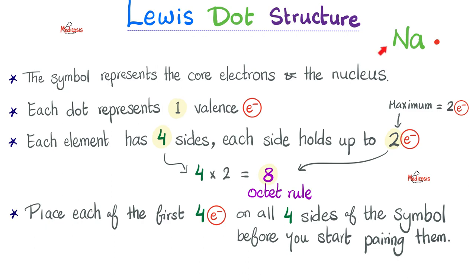How do we draw Lewis dot structure? First, you start with the symbol. The symbol represents not just the nucleus, but the core electrons — all electrons except those in the valence shell. For sodium, the letters Na represent 10 core electrons, because sodium has 11 total and only one valence electron. One dot equals one valence electron. Each element symbol has four sides — up, down, right, left — and each side can hold up to two electrons maximum.